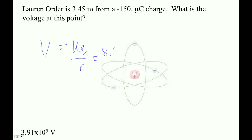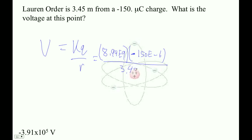Alright, so it's 8.99 times negative 150 divided by — so let's see, this is 150 — oops — V minus 6 divided by 3.45.